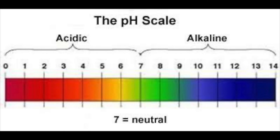For example, a change from 8 to 8.1 may seem minimal, but in reality it's actually a big change. For example, lemon juice has a pH of 2, pure water has a pH of 7, which is also neutral on the pH scale, and bleach has a pH of 12.